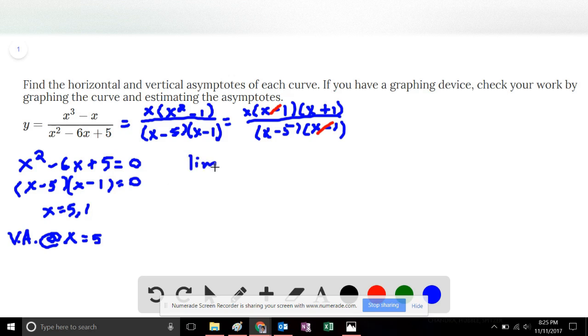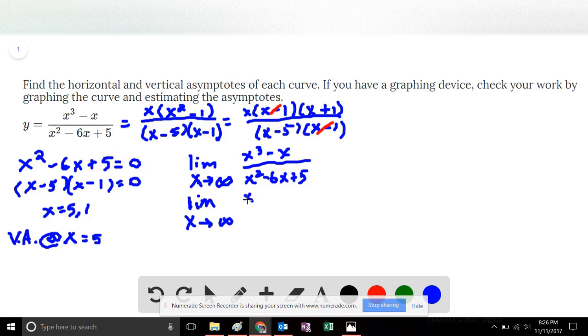For horizontal asymptotes, we take the function and ask ourselves, what is the limit as x approaches infinity? The function is x cubed minus x divided by x squared minus 6x plus 5. One step we can take is to divide each term by x squared. x cubed over x squared is x, minus x over x squared is 1 over x. The denominator: x squared over x squared is 1, 6x over x squared is 6 over x, and 5 over x squared is the last term.